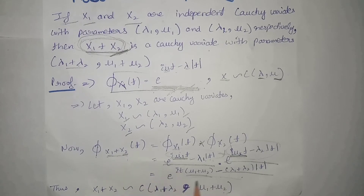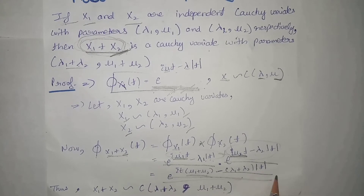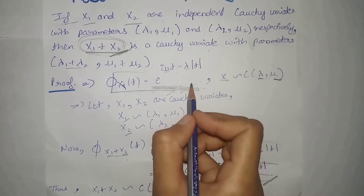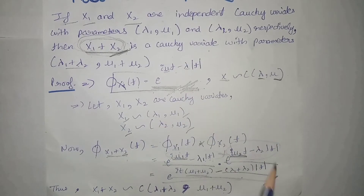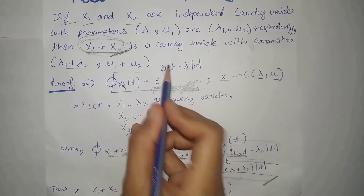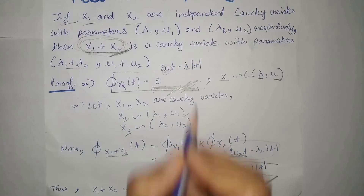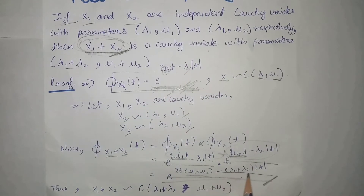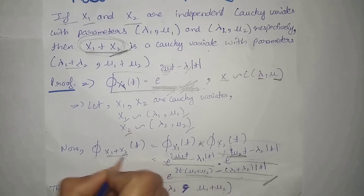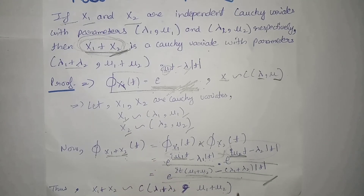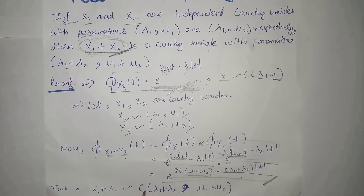Comparing this result with the general form, we identify that mu equals mu1 plus mu2 and lambda equals lambda1 plus lambda2. That means x1 plus x2 is also a Cauchy variate with parameters (mu1 + mu2) and (lambda1 + lambda2), i.e., x1 plus x2 belongs to the Cauchy distribution with these two parameters.